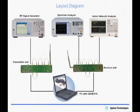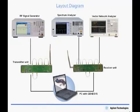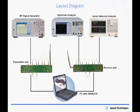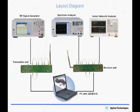The equipment starts with an N9310A RF signal generator, an N9320B RF spectrum analyzer, and an E5061A vector network analyzer. There's a transmitter and receiver unit, and Genesis software on the PC. The RF signal generator is used as an input signal to the transmitter unit, and the spectrum analyzer and vector network analyzer are used to measure the output signals on the receiver unit.